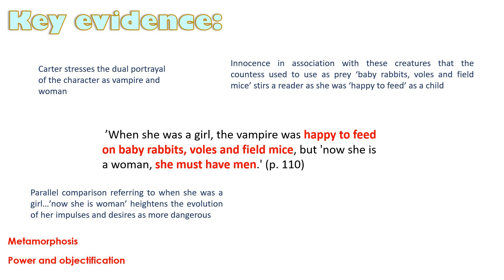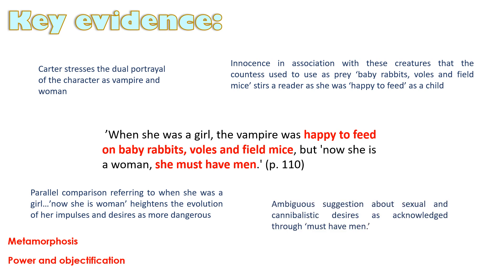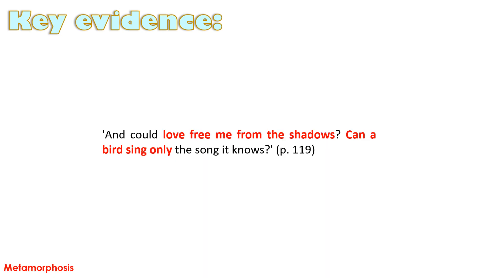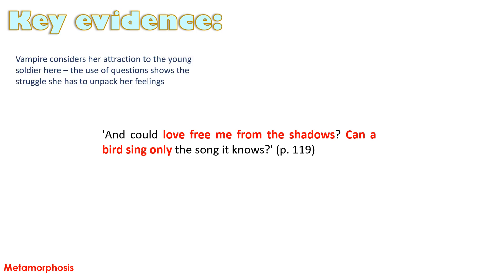It's ambiguous to what extent 'she must have men' is some sort of carnal sexual obsession, or to what extent these are cannibalistic desires that echo the fact that she ate animals. But there's a sense in which this is more than just a hunger for food — this is about a sexual appetite and a sexual awakening, but it comes at the cost of others dying. The evidence 'could love free me from the shadows? Can a bird sing only the song it knows?' echoes the magnificence of Carter's writing, drawing us into the thought process of the vampire considering her attraction to the young English soldier. The use of questions shows her struggle as she unpacks her feelings, probing the notion that embracing your sexual desires can liberate you.